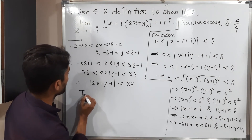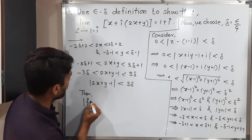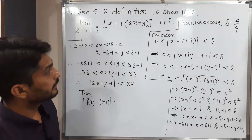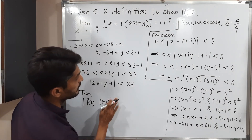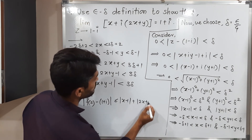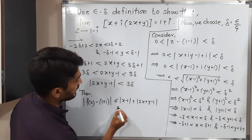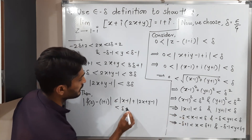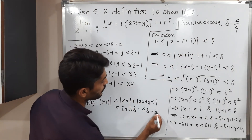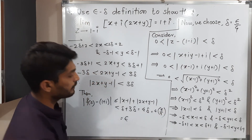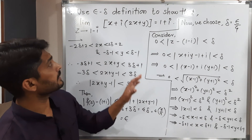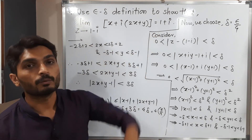Then mod f of z minus 1 plus i — which we already calculated — from inequality 1 is less than or equal to mod x minus 1 plus mod 2x plus y minus 1, which is less than delta plus 3 delta equals 4 delta. Since our choice of delta is epsilon by 4, we get 4 times epsilon by 4 equals epsilon. So finally, mod f of z minus 1 plus i is less than epsilon, the definition is satisfied, and therefore limit as z tends to 1 minus i of f of z equals 1 plus i.